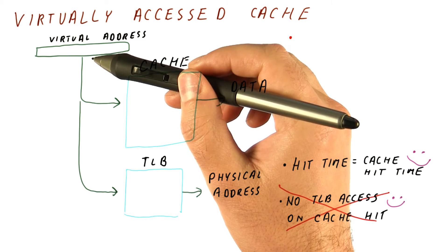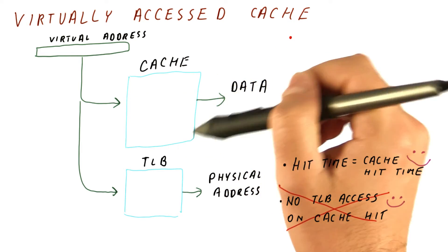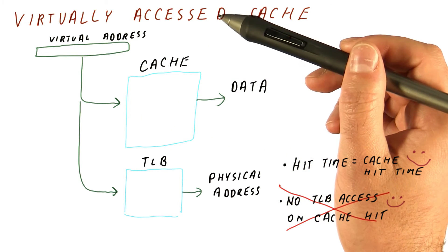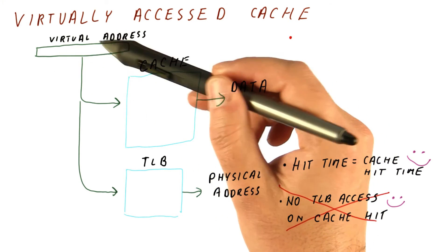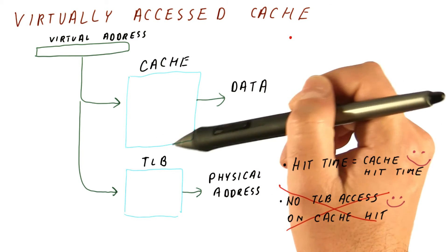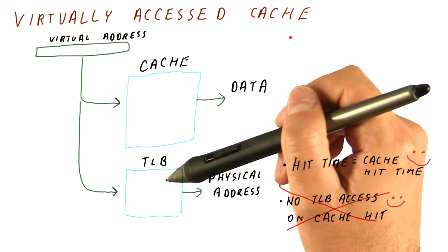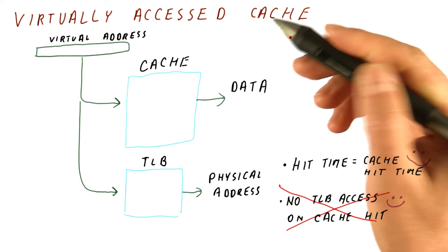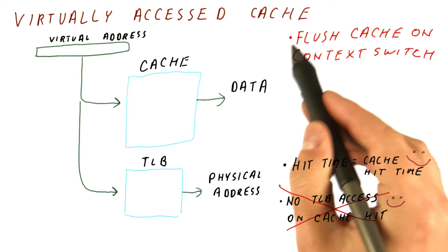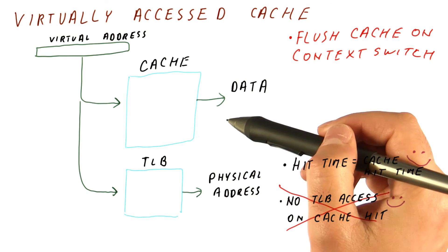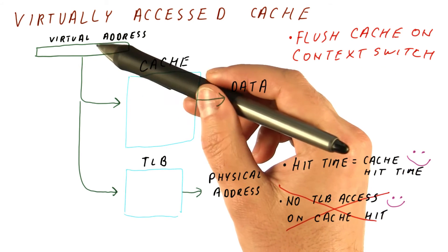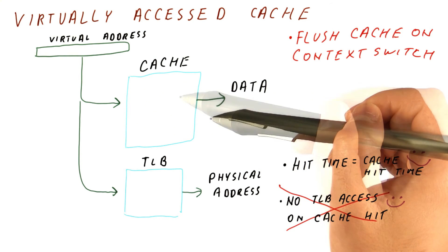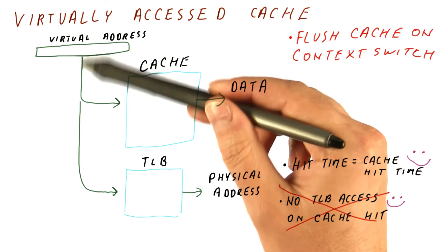A bigger problem is that the virtual address is specific to a particular process. So if we were running one process and filled the cache with its data, once we begin running another process, that other process will have virtual addresses that might overlap with the addresses from the previous process, but they should be going to different data. Because our cache only knows about virtual addresses, we now need to flush our cache — meaning remove all the data from it — every time we do a context switch, since virtual addresses will map to different memory locations.